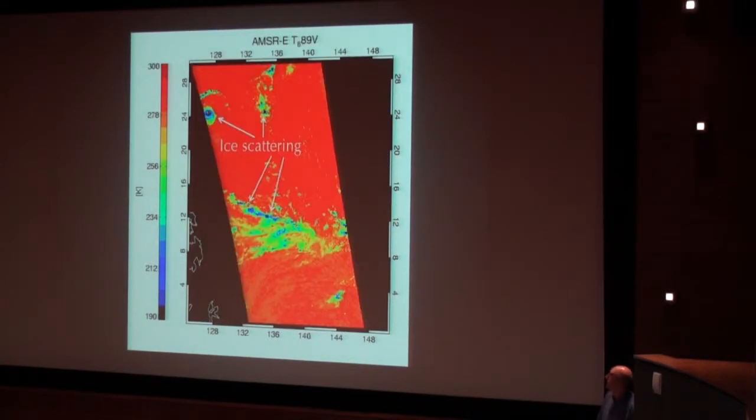And finally, another picture showing some of the tropics. This is 89 gigahertz brightness temperature showing a lot of strong brightness temperature depressions over obviously cloud precipitation areas. And this is the ice scattering signature that we use as well. And this is actually the main physical basis for overland microwave precipitation retrievals.